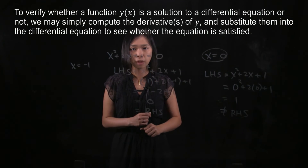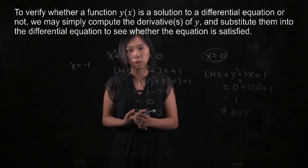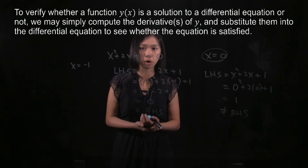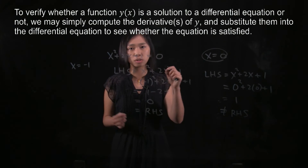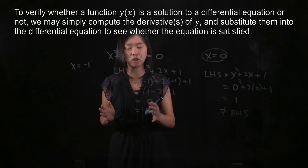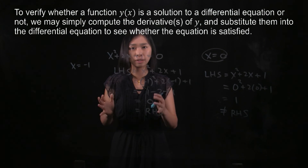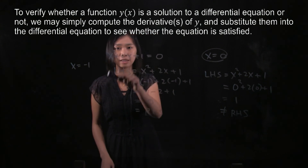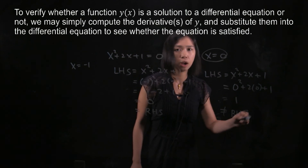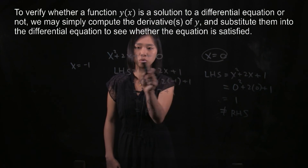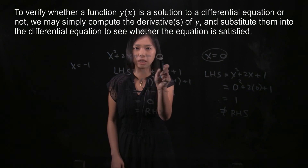So what you try to do is: given your y, your dy/dx, and maybe d²y/dx², you substitute all of these back into one side of the differential equation and check whether it equals the other side. This is essentially the same process as when we check whether a number is a solution to the quadratic equation.